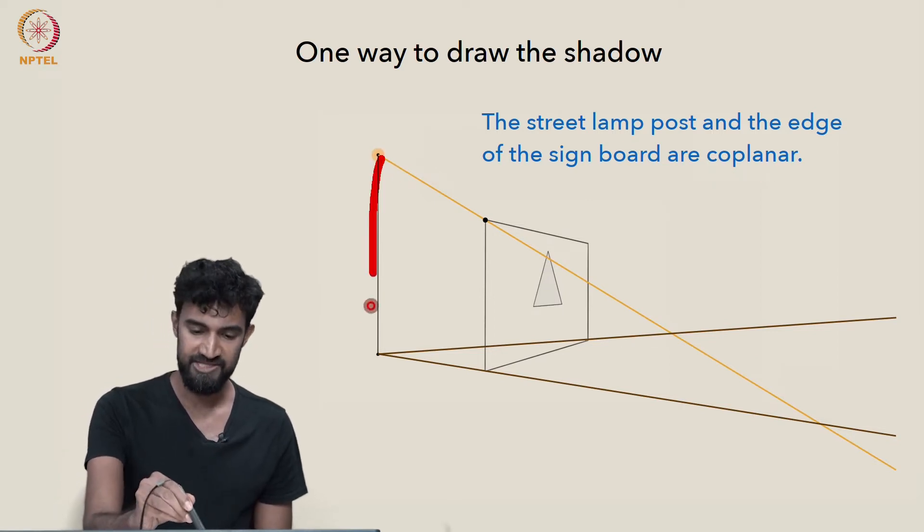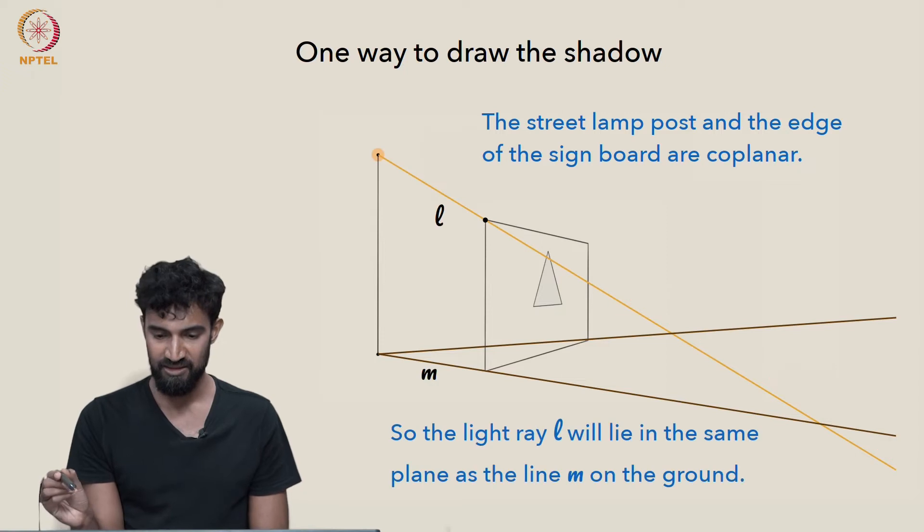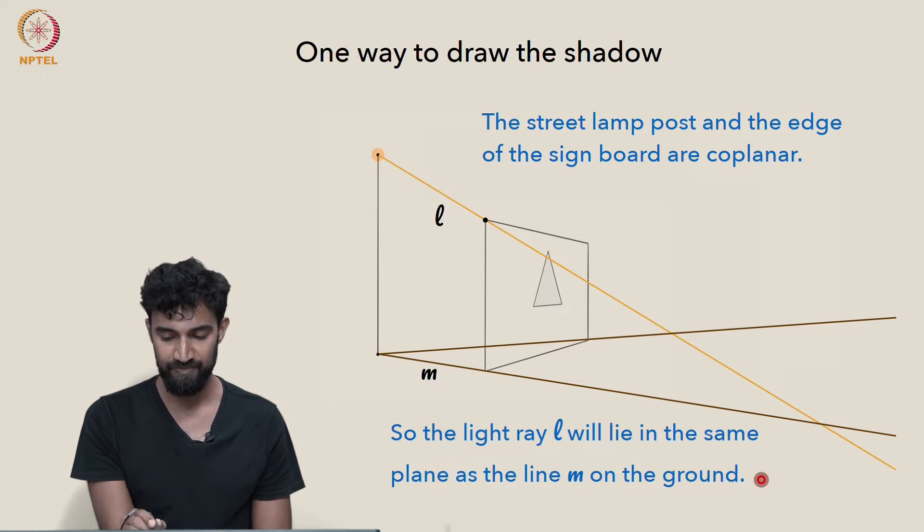So, this line and this line are coplanar. So, this line and this line are also coplanar. The light ray L will lie on the same plane as the line M on the ground. Well, in that case, that means that these lines actually do intersect.